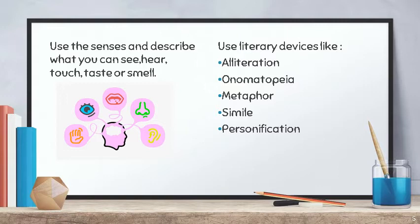A simile is a figure of speech that makes a comparison showing similarities between two different things. Unlike a metaphor, a simile draws resemblance with the help of the words 'like' or 'as.' Therefore, it is a direct comparison. For example: 'Her cheeks are red like a rose.'